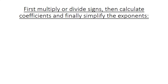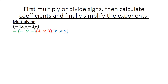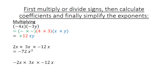First multiply or divide signs, then calculate the coefficient, and finally simplify the exponents. Multiplying: a negative times a negative is a positive. 4 times 3 equals 12, and x times y is xy. 2x times 3x times negative 12x: positive times negative is negative; 2 times 3 is 6 times 12 is 72, and x times x times x is x to the power of 3. Negative 2x times 3x times negative 12x: negative times positive times negative is positive; 2 times 3 times 12 equals 72, and x cubed.